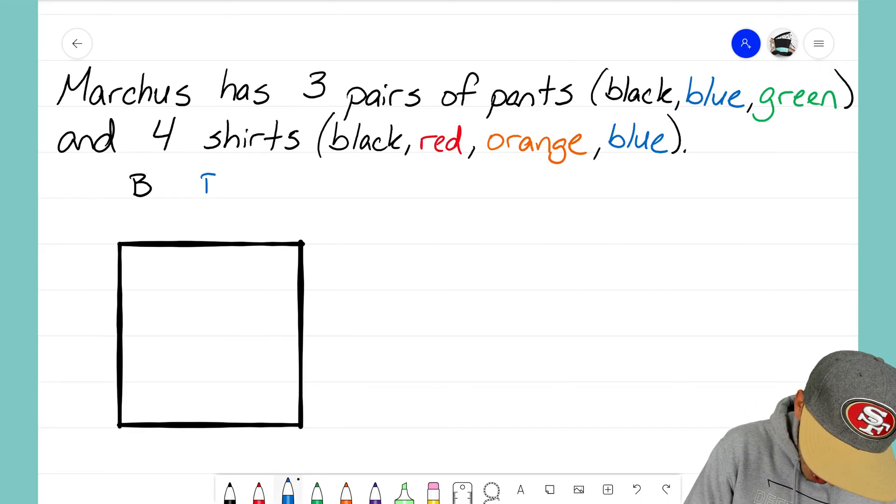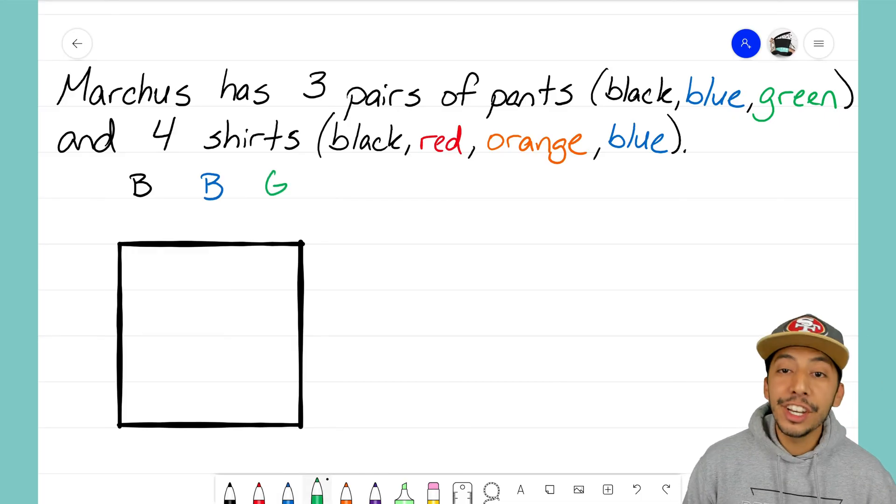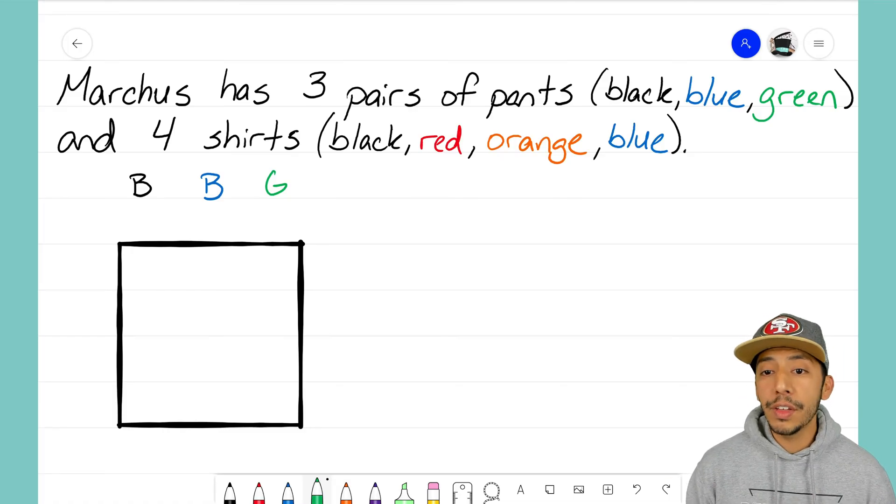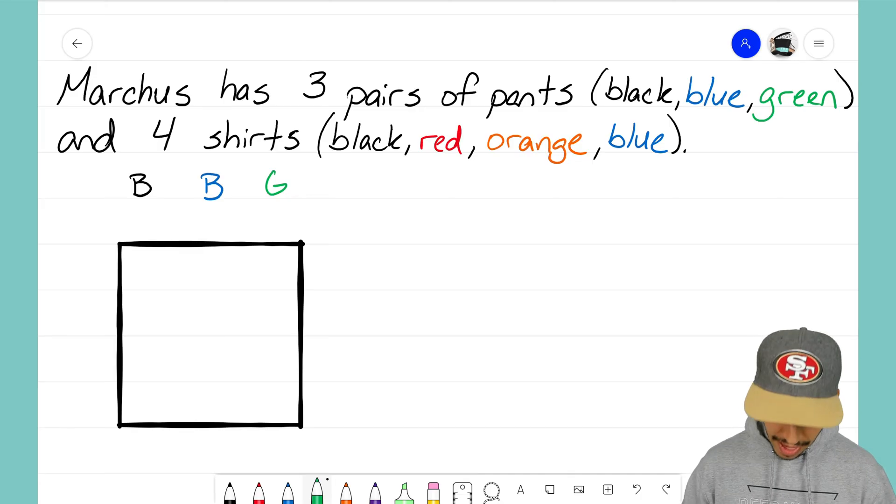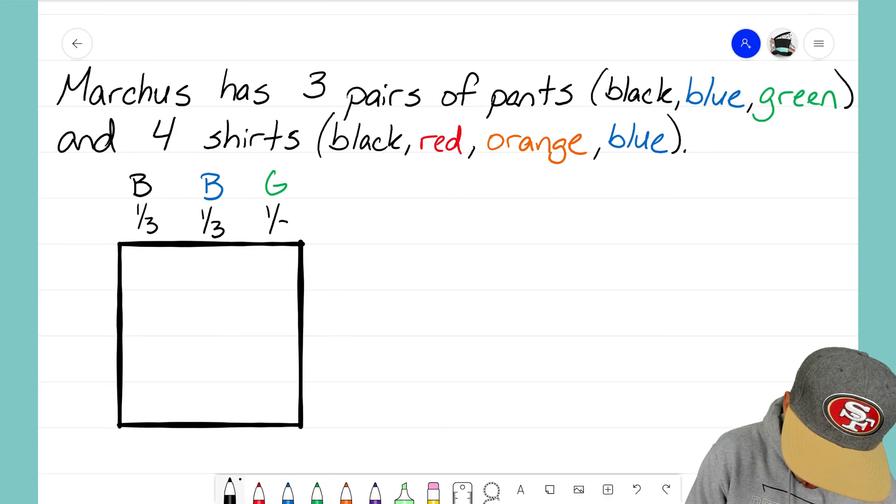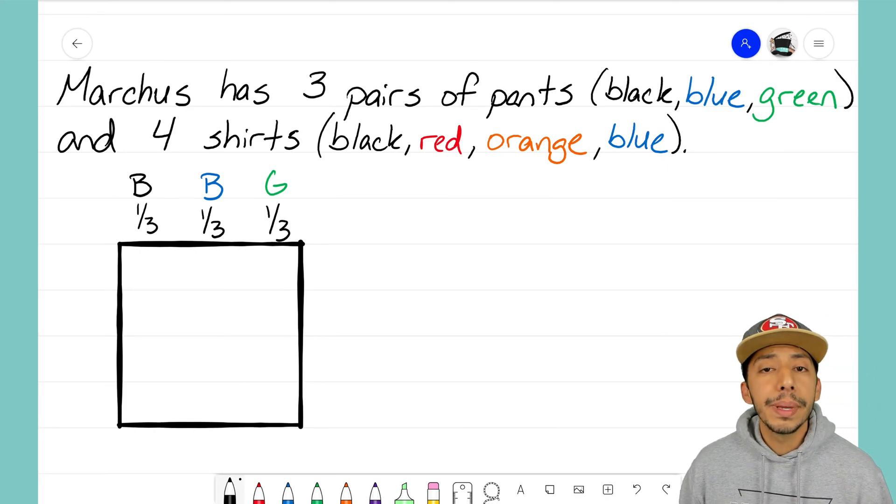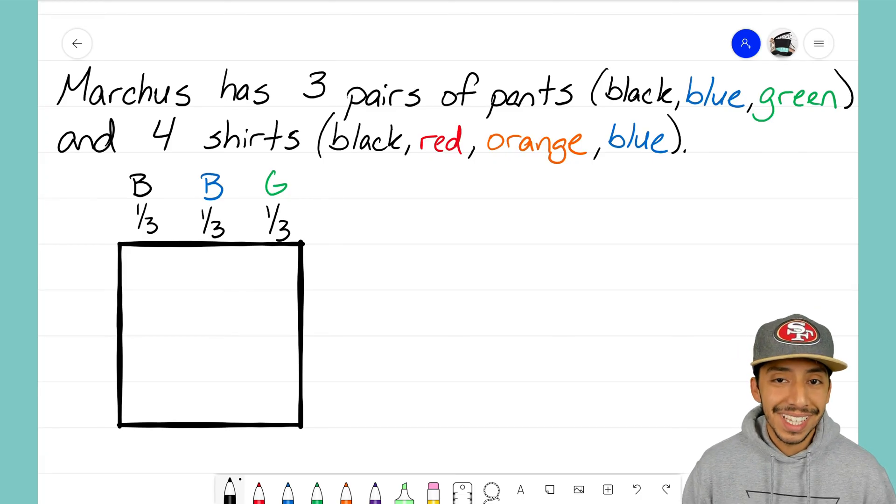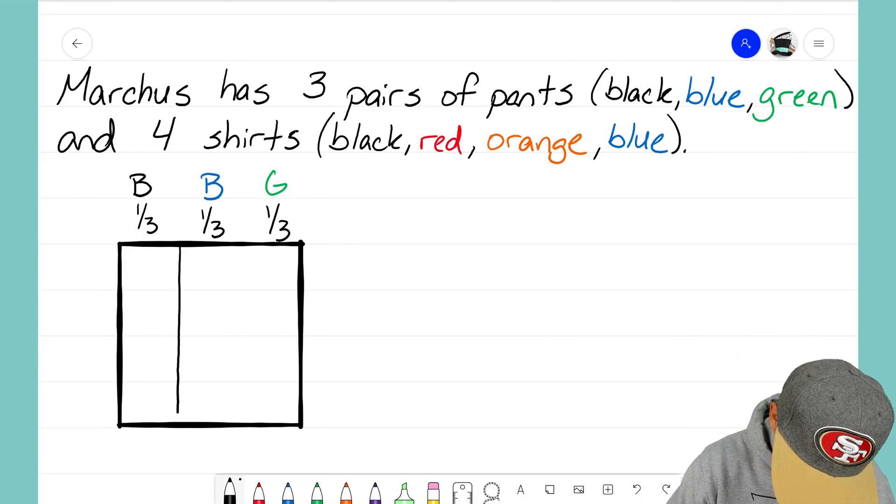Notice that it doesn't say he's more likely to pick one color over the other, so they're all equally likely to happen. Because of that reason, I know that the fraction for every possible pair of pants here is going to be one third, because he has a one in three chance of choosing that pair of pants. Now I'm going to go ahead and draw in my columns here, just so I can now see that the left column is about the black pants, the middle is the blue, and the right is the green.